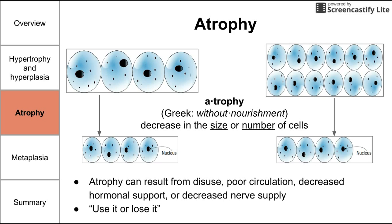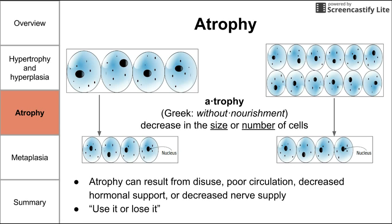Organs and tissues are typically in homeostasis, and a given set of cells might be performing a certain function. But when they experience a decrease in pressure — such as less exercise or decreased hormonal stimulation — atrophy can occur if the organ requires less of that function. This kind of echoes the "use it or lose it" expression. Much like hypertrophy and hyperplasia, atrophy can be physiological or pathological in nature, and we'll discuss examples of both.